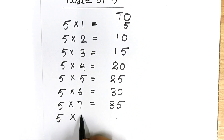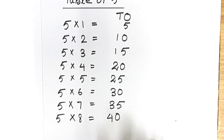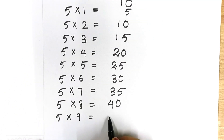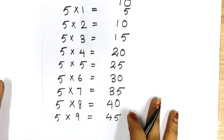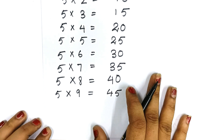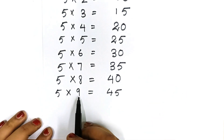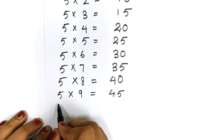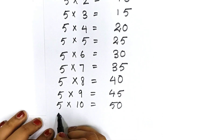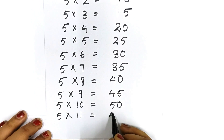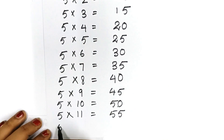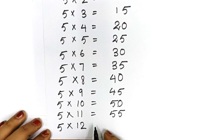Five eight are forty. Five nine are forty-five. Five ten are fifty. Five eleven are fifty-five. Five twelve are sixty.